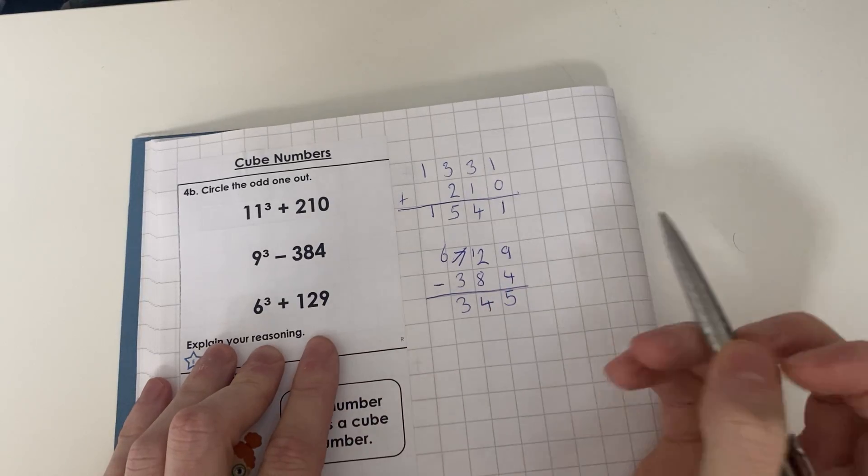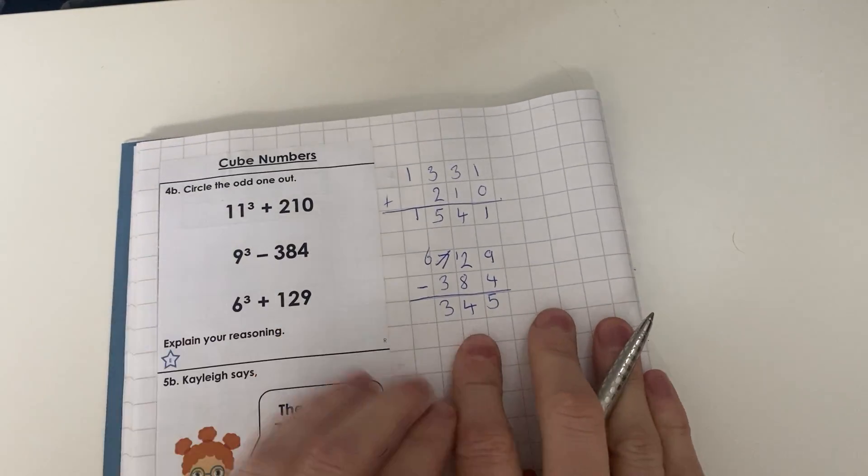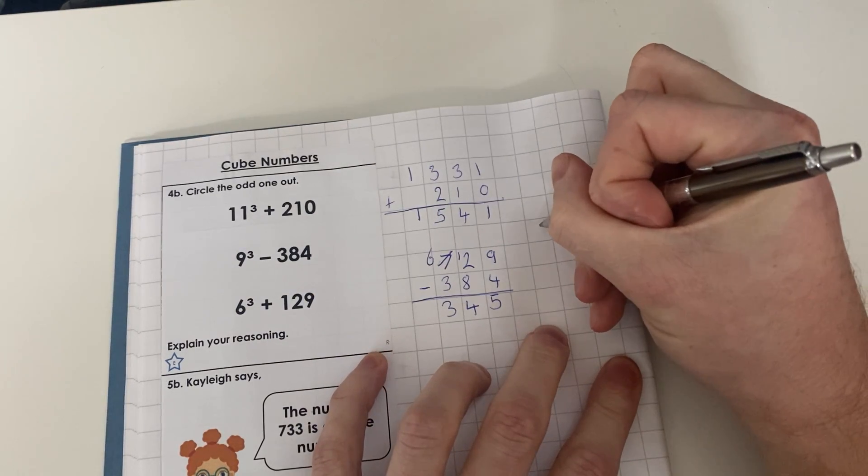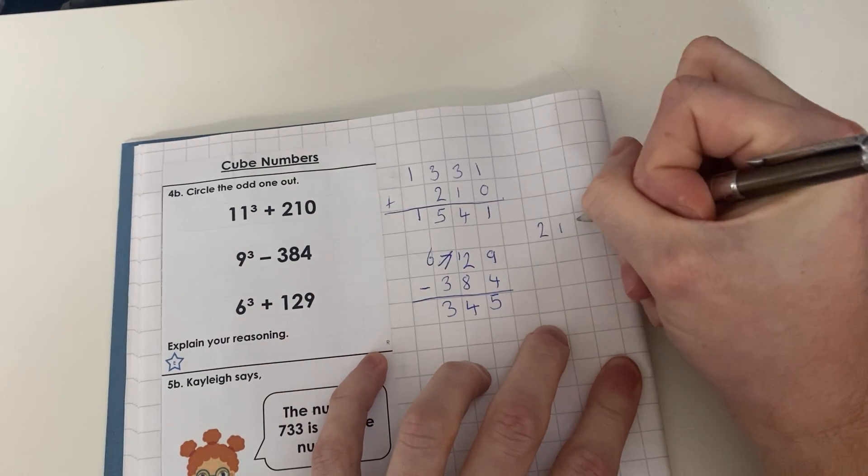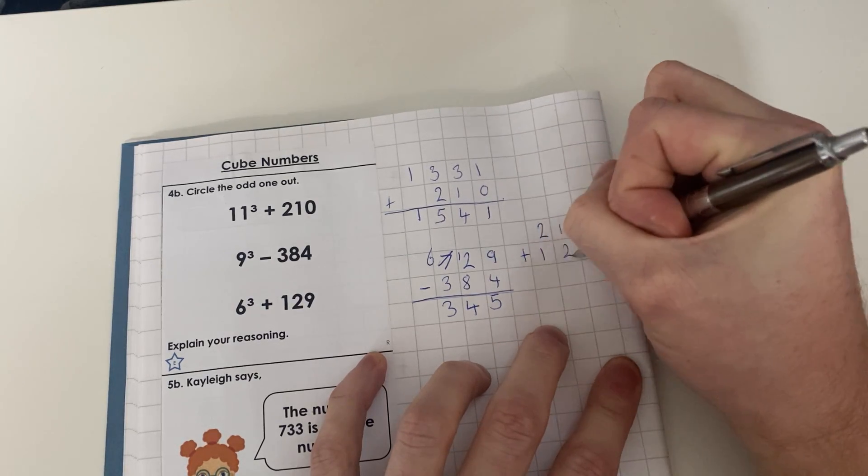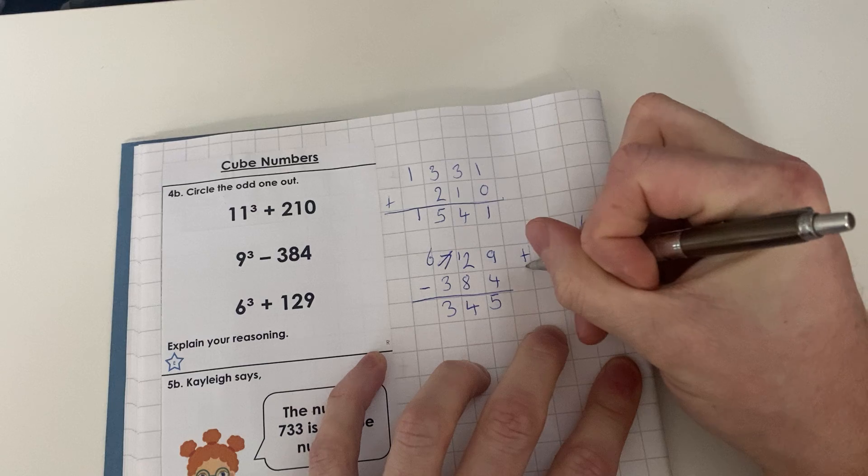6³ + 129, so we're going to work this out now. 6 cubed, as I said Mr. Taylor's knowledge is really good, is 216. Add 129.